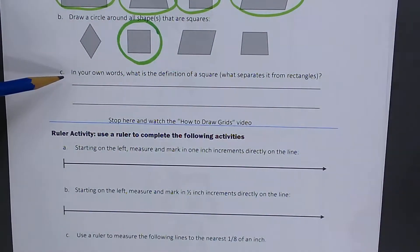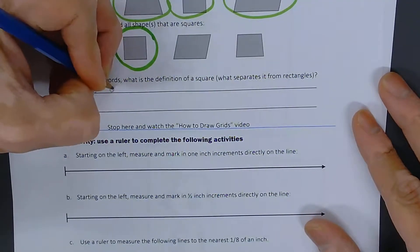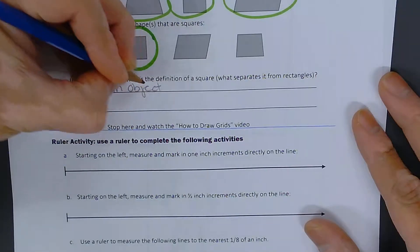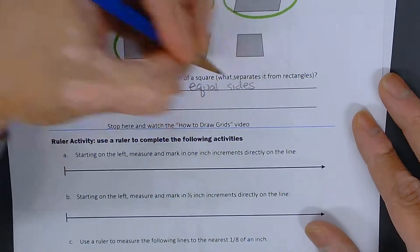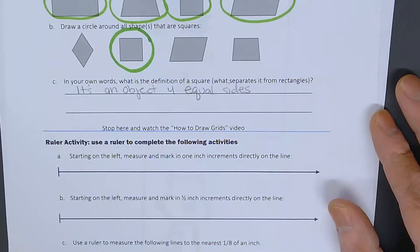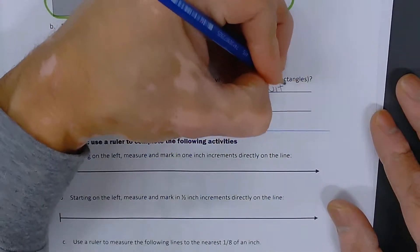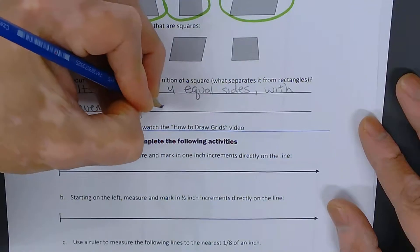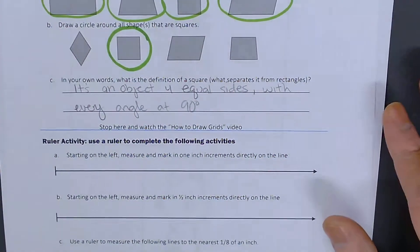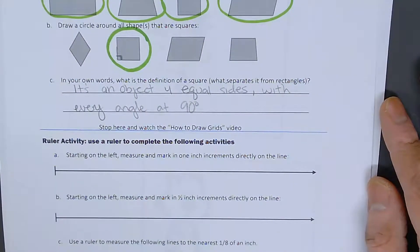So in C, it says in your own words, what is the definition of a square? What separates it from rectangles? It's an object with four equal sides. They also need to be perpendicular to one another, each corner. What does that mean? That means that every angle is at 90 degrees. That means that every single one of these corners is a right angle. You have to remember that.